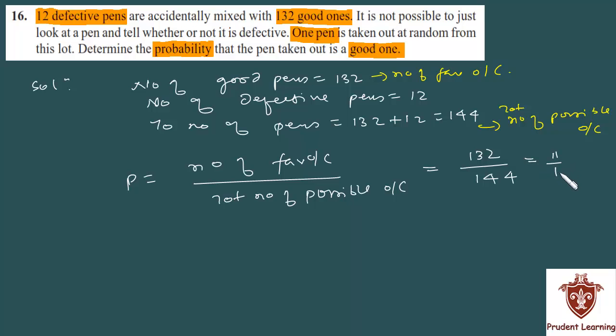Then 11 upon 12 will be the answer. You can see this: 12 into 11 is 132 and 12 into 12 is 144. So this is 11 upon 12. This is your final answer. Therefore, the probability of getting a good pen is 11 upon 12.